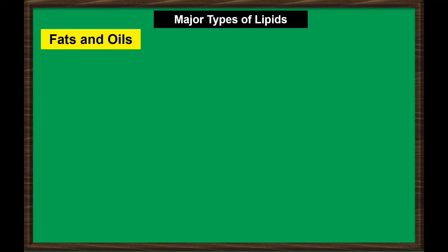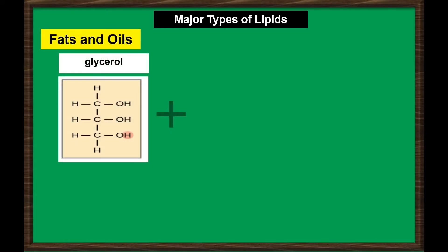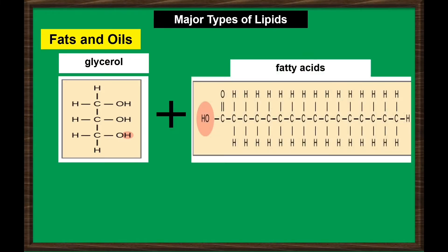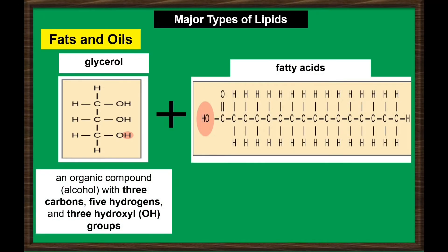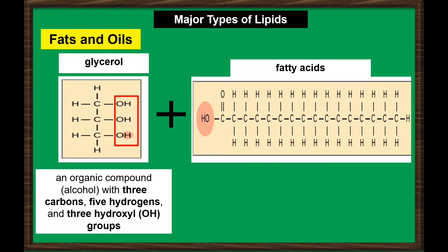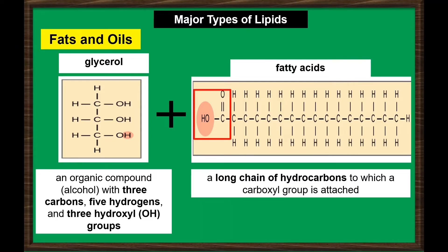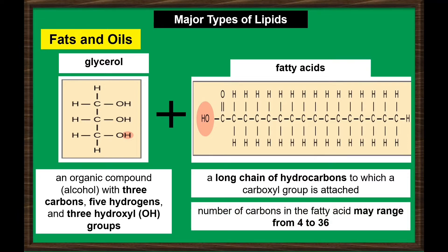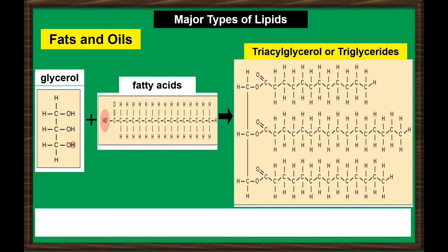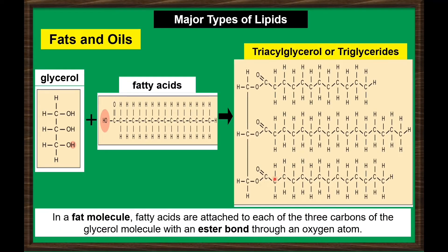Fats and oils: A fat molecule consists of two main components, glycerol and fatty acids. Glycerol is an organic compound with three carbons, five hydrogens, and three hydroxyl groups. Fatty acids have a long chain of hydrocarbons to which a carboxyl group is attached, hence the name fatty acid. In a fat molecule, the fatty acids are attached to each of the three carbons of the glycerol molecule with an ester bond through an oxygen atom.